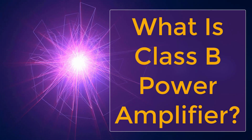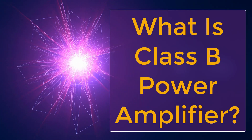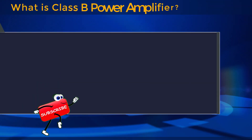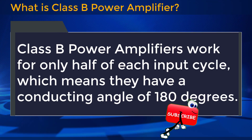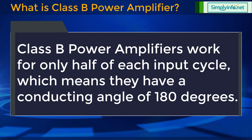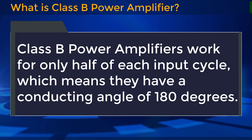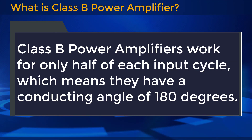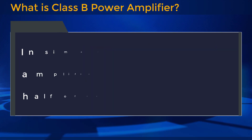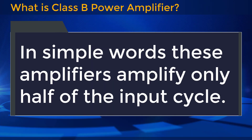What is a class B power amplifier? Class B power amplifiers work for only half of each input cycle, which means they have a conducting angle of 180 degrees. In simple words, these amplifiers amplify only half of the input cycle.